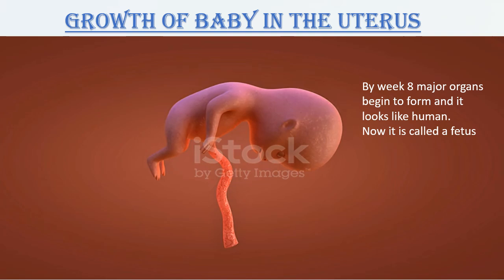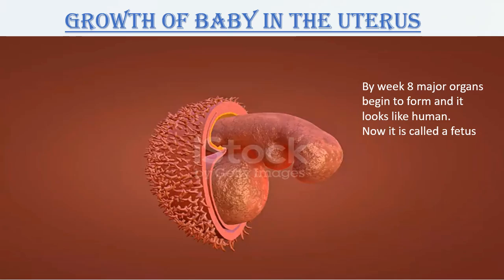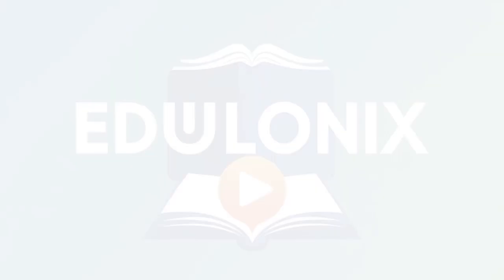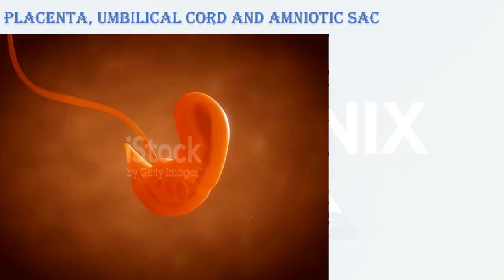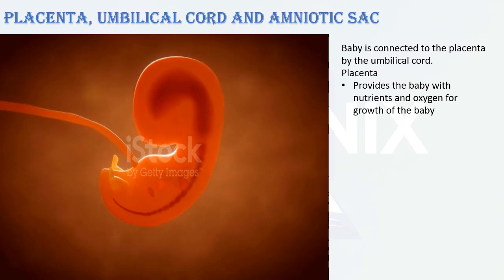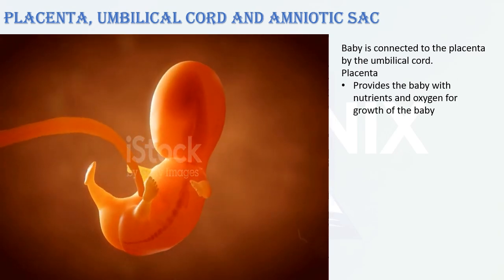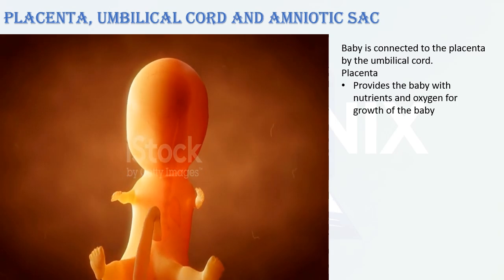At the ninth month, the baby is fully developed, weighing about three to four kilograms, and is ready for birth. The baby is connected to the mother through the umbilical cord — not the amniotic sac.